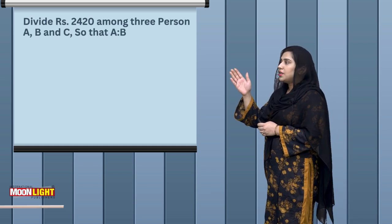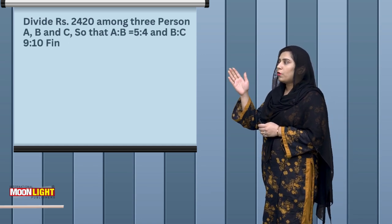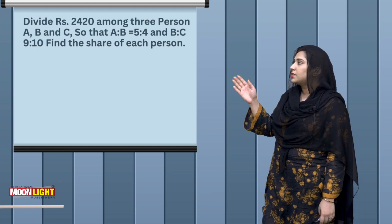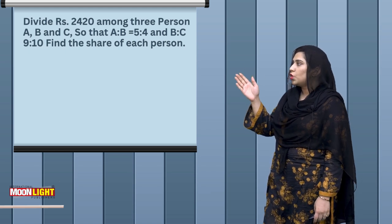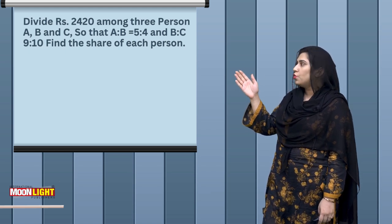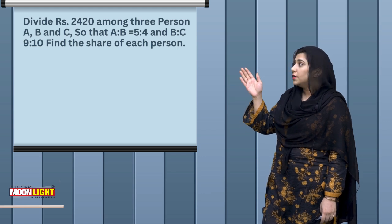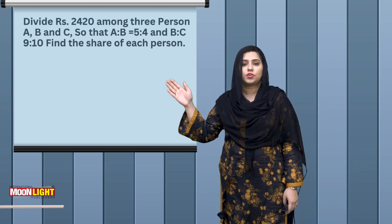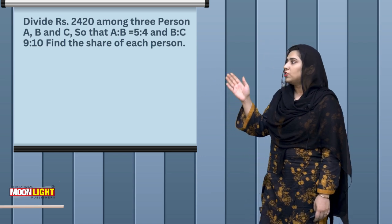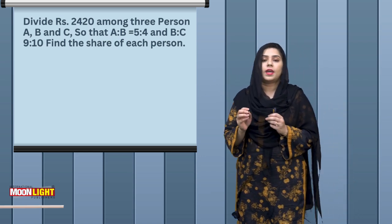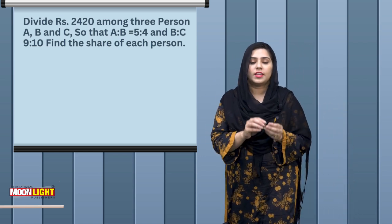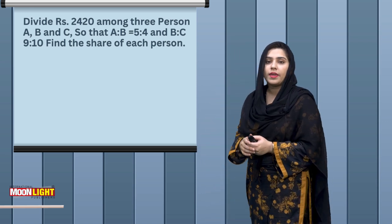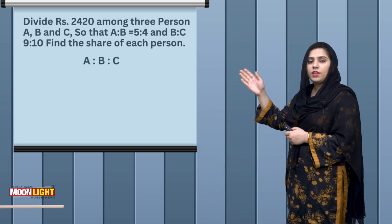In question number 2, divide rupees 2,420 among 3 persons A, B and C, such that A ratio B equals 5 ratio 4 and B ratio C equals 9 ratio 10. We have to find the share of each person. The ratios given for A, B and C are written as A:B = 5:4 and B:C = 9:10.